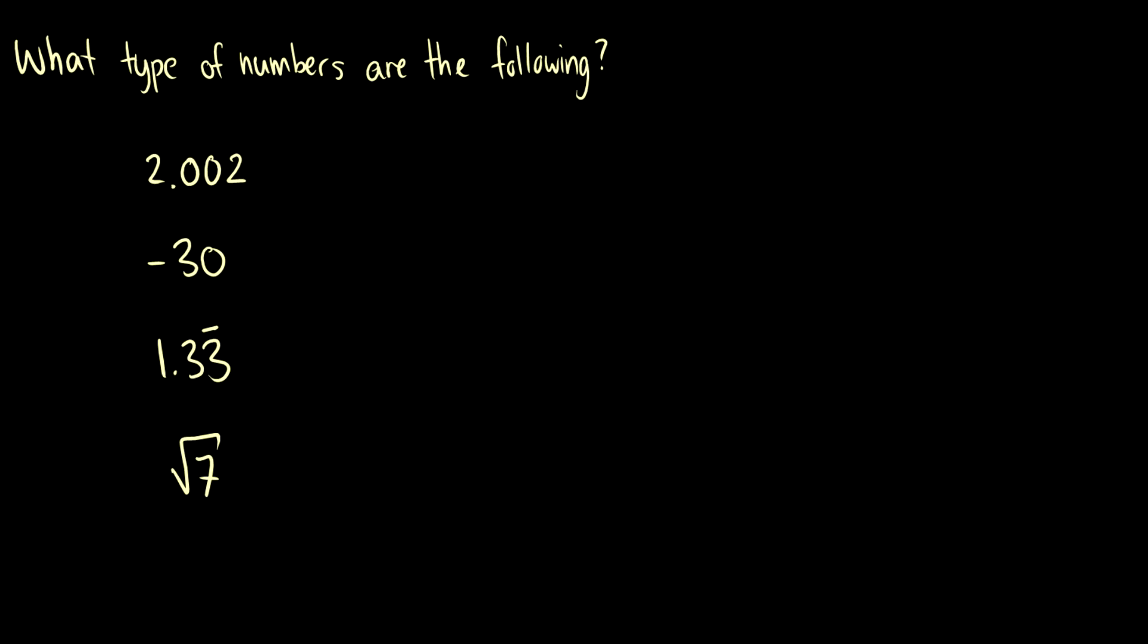2.002. Well, it's not an integer, it's not a natural number. It's finite, we know what the last number is. So it's rational. So 2.002 is going to be rational.